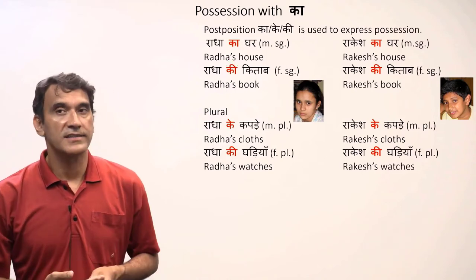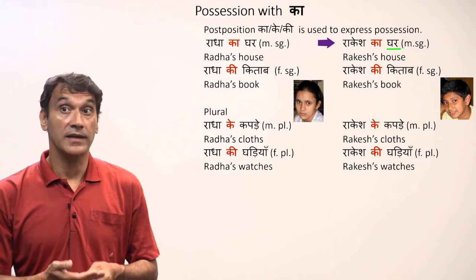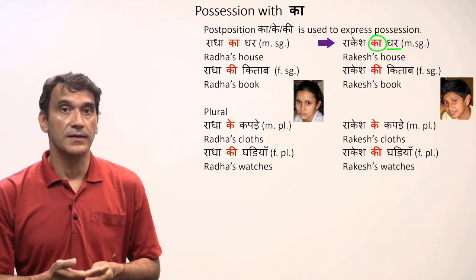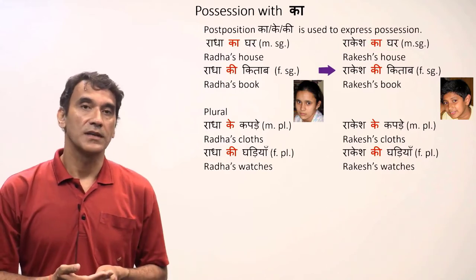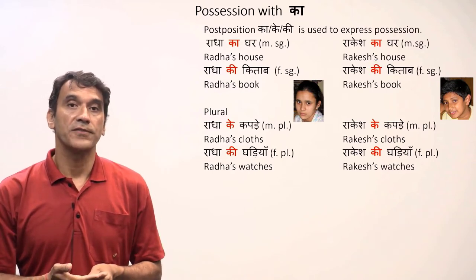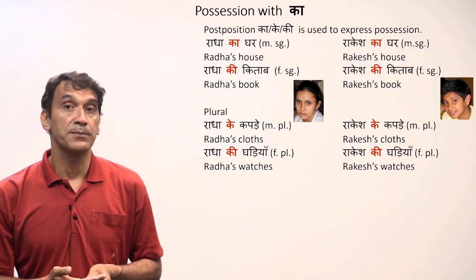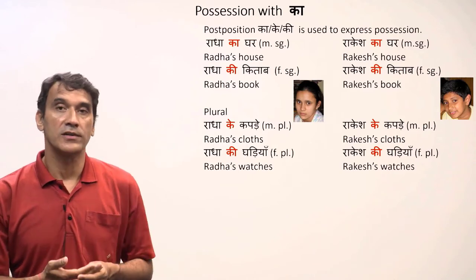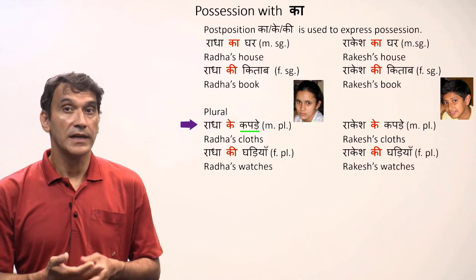Another example: Rakesh ka ghar — Rakesh's house. Again, 'ghar' is masculine, so it is 'ka'. Rakesh ki kitab — Rakesh's book. 'Kitab' is feminine, so it is 'ki'. The choice of 'ka' or 'ki' is based on the thing possessed, regardless of who is possessing it — whether a boy or a girl.